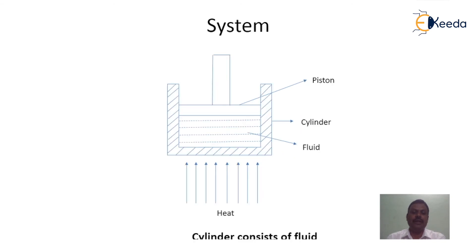If we have a closed system which has a certain quantity of fluid that is bounded and placed in a piston-cylinder arrangement, and if heat is continuously supplied to the fluid, the expansion of the fluid takes place and there will be only energy transfer, but there is no transfer of mass across the system boundary. It is a system of fixed mass or controlled mass, and the analysis of the closed system is called as system approach.